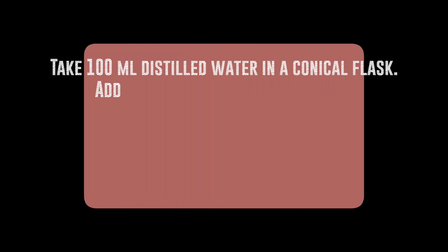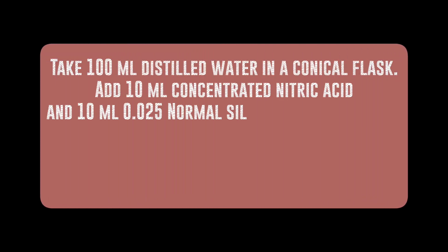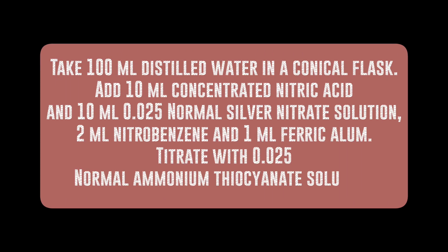For the blank titration, take 100 milliliters distilled water in a conical flask. Add 10 milliliters concentrated nitric acid and 10 milliliters 0.025 normal silver nitrate solution, 2 milliliters nitrobenzene, and 1 milliliter ferric alum. Titrate with 0.025 normal ammonium thiocyanate solution.